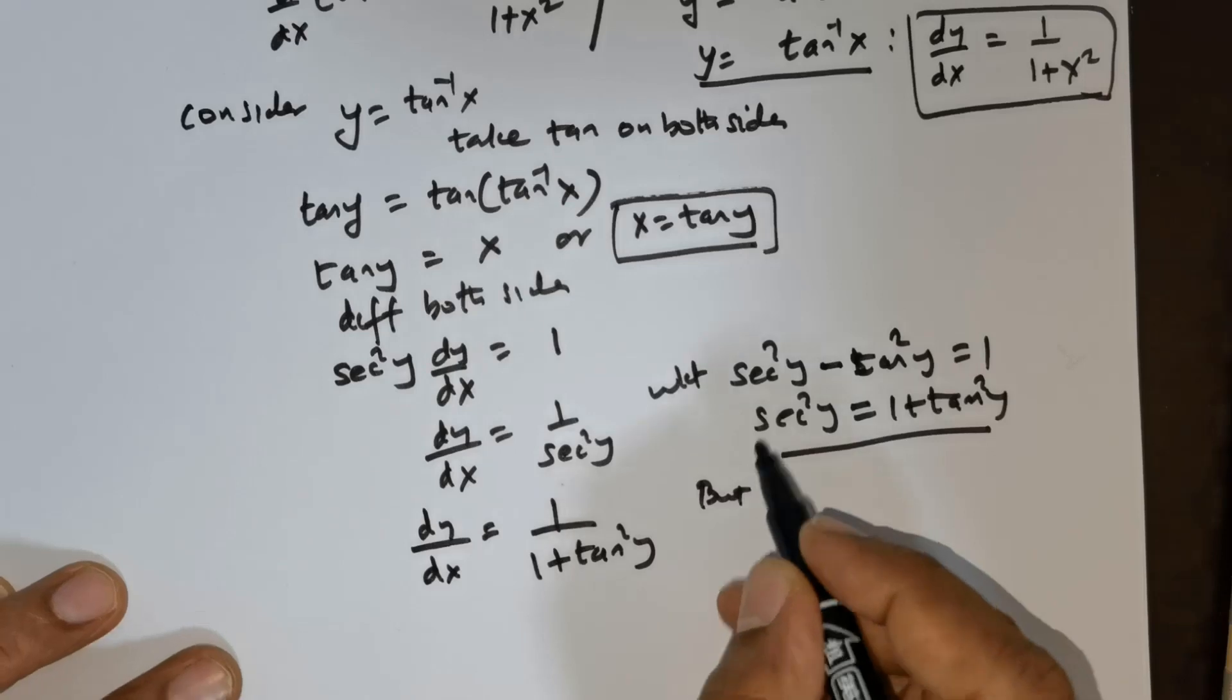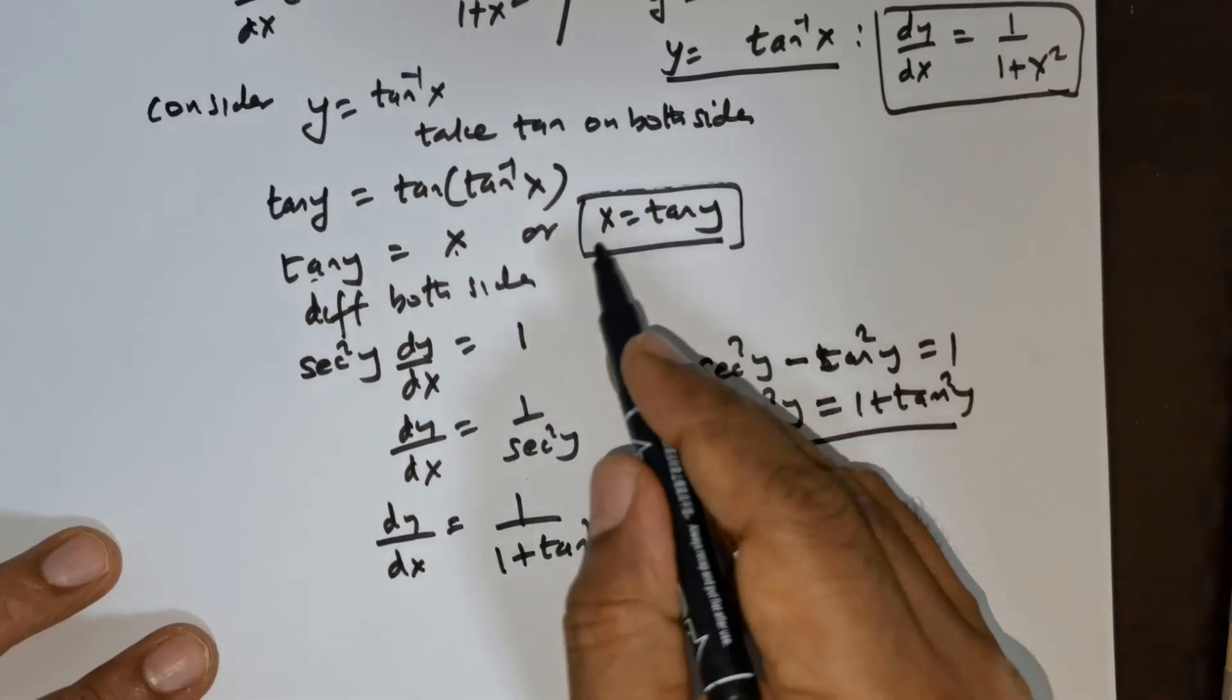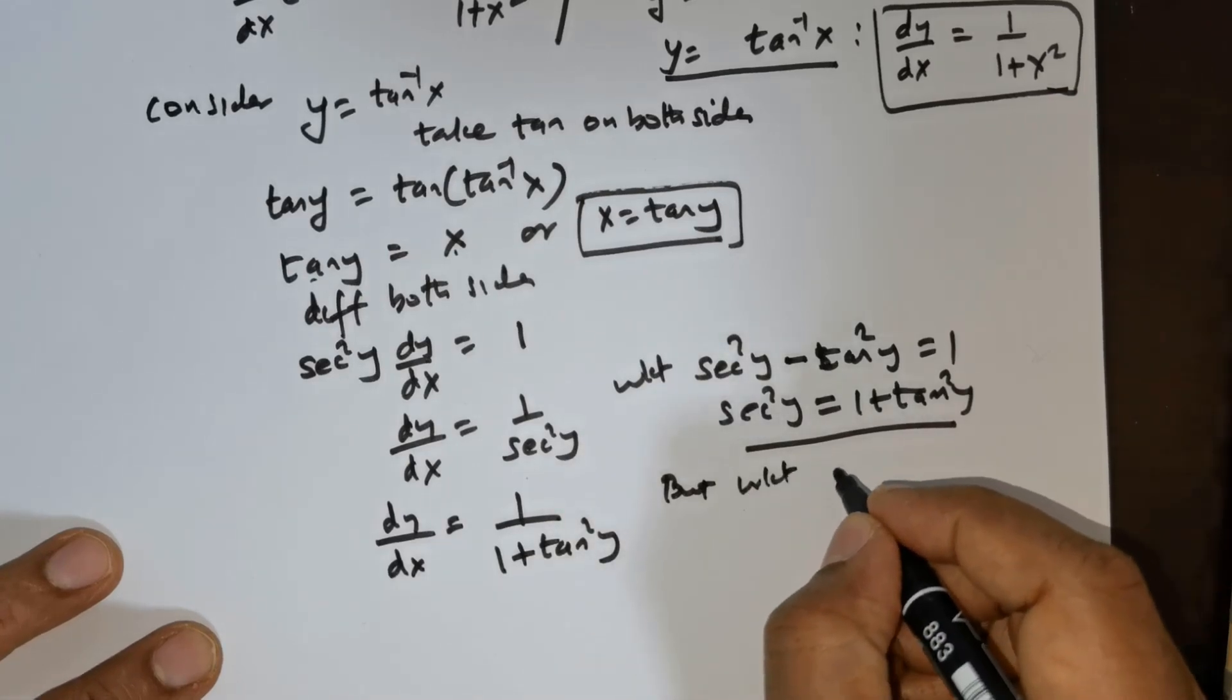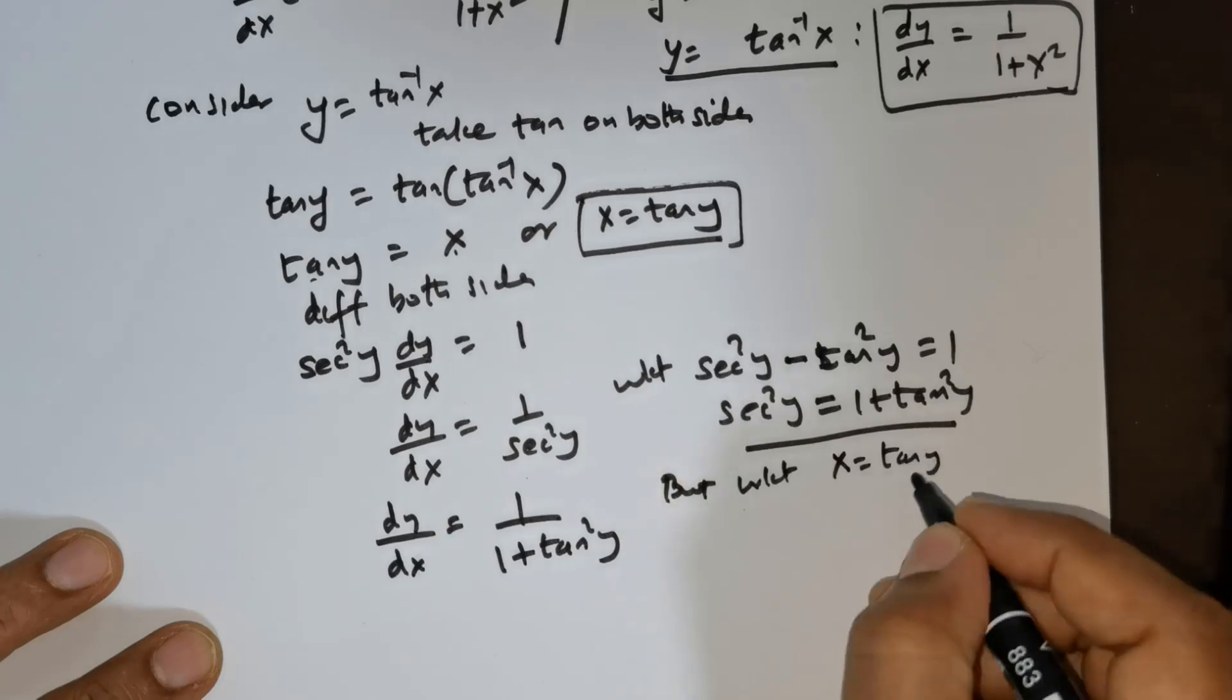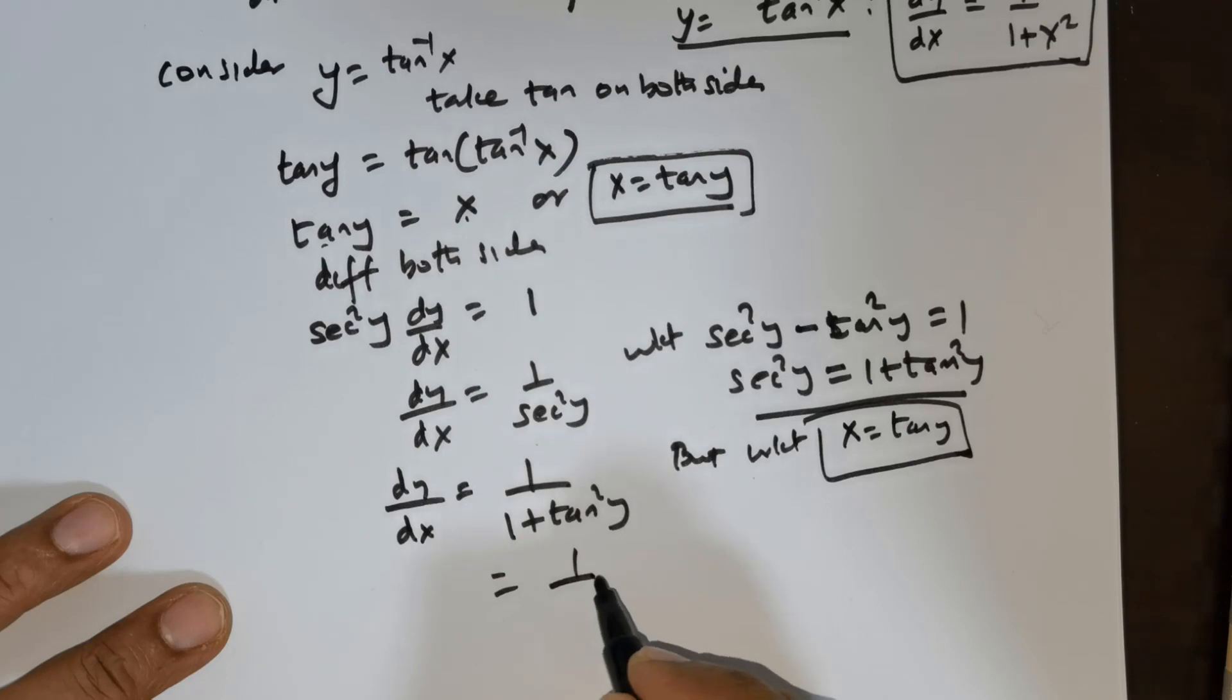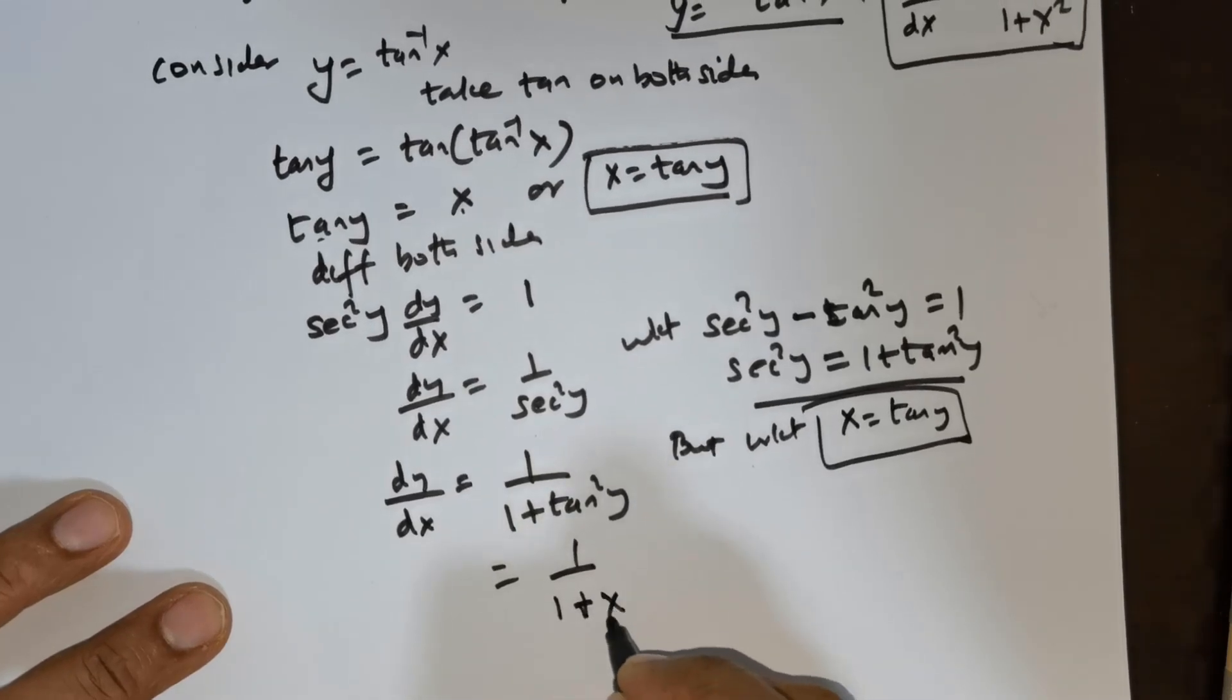But what do we know? We know that x is equal to tan y. So in place of tan y I would be substituting x, which is going to give us 1 plus x squared.